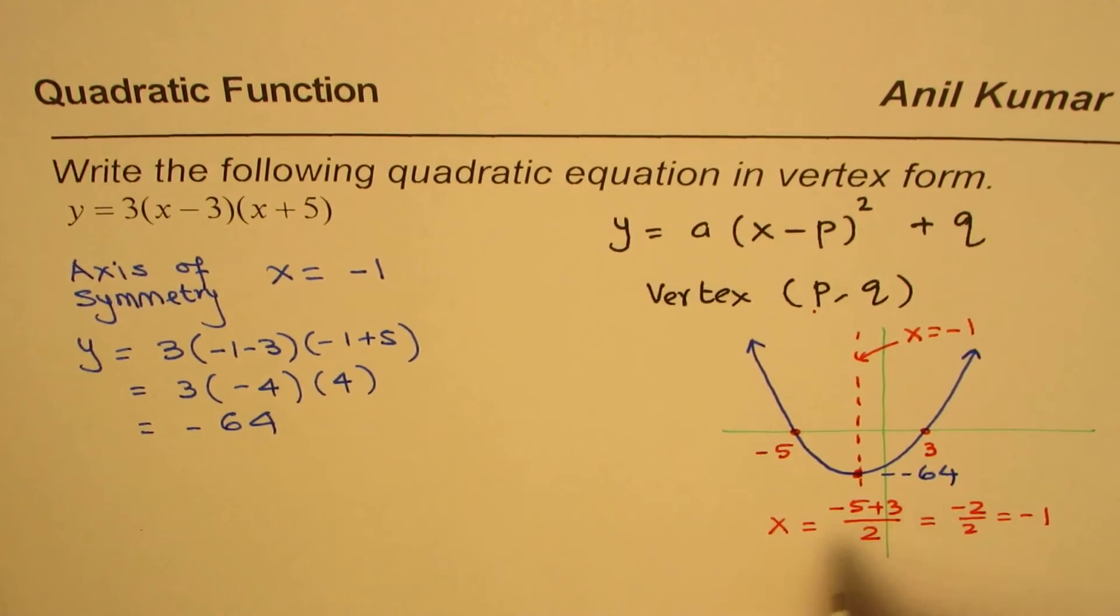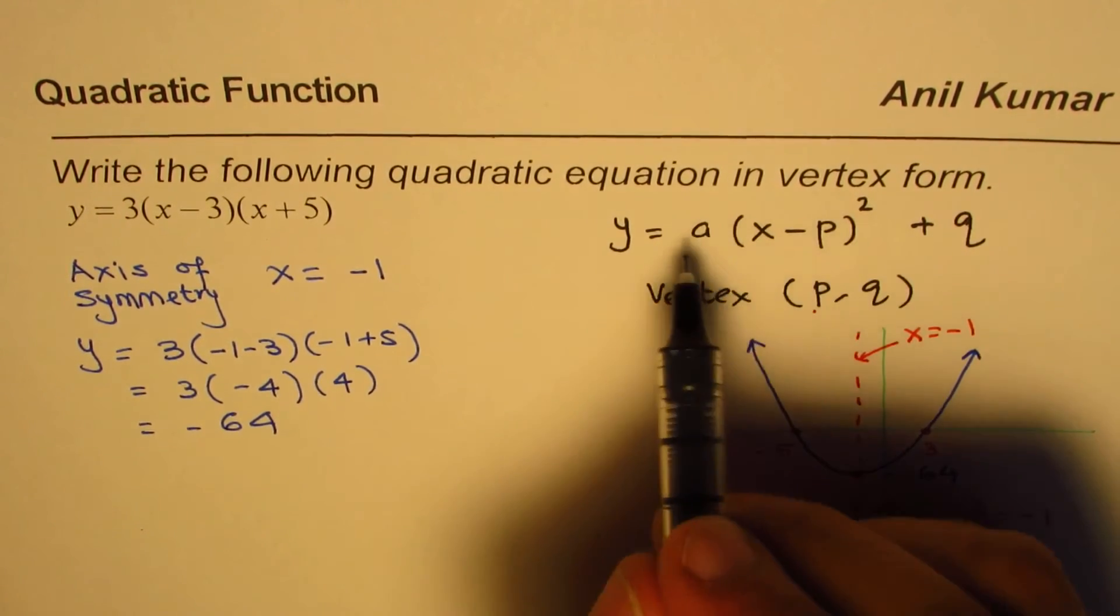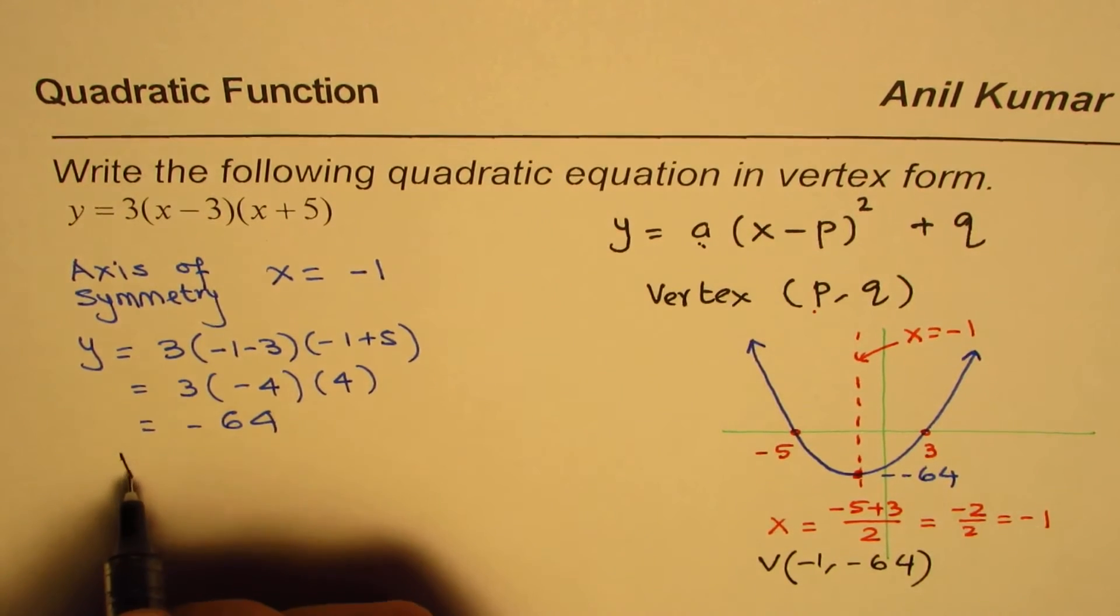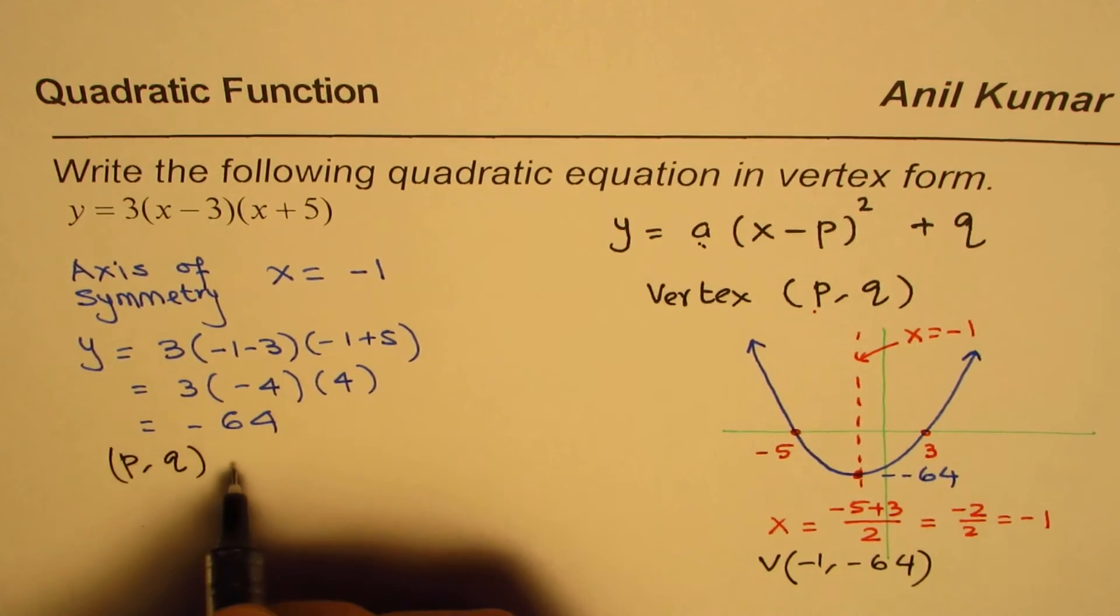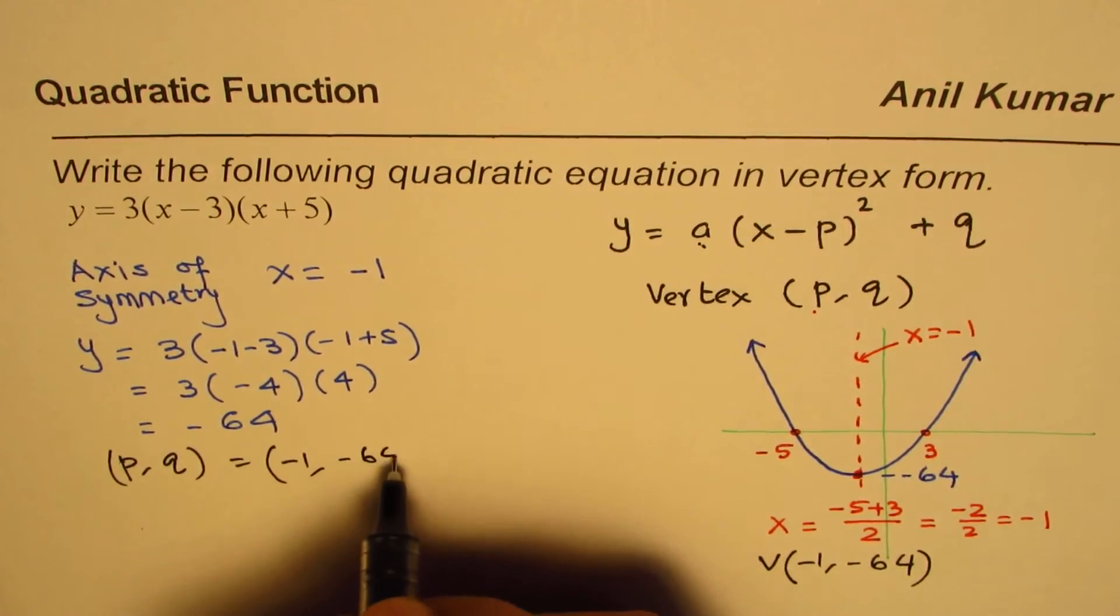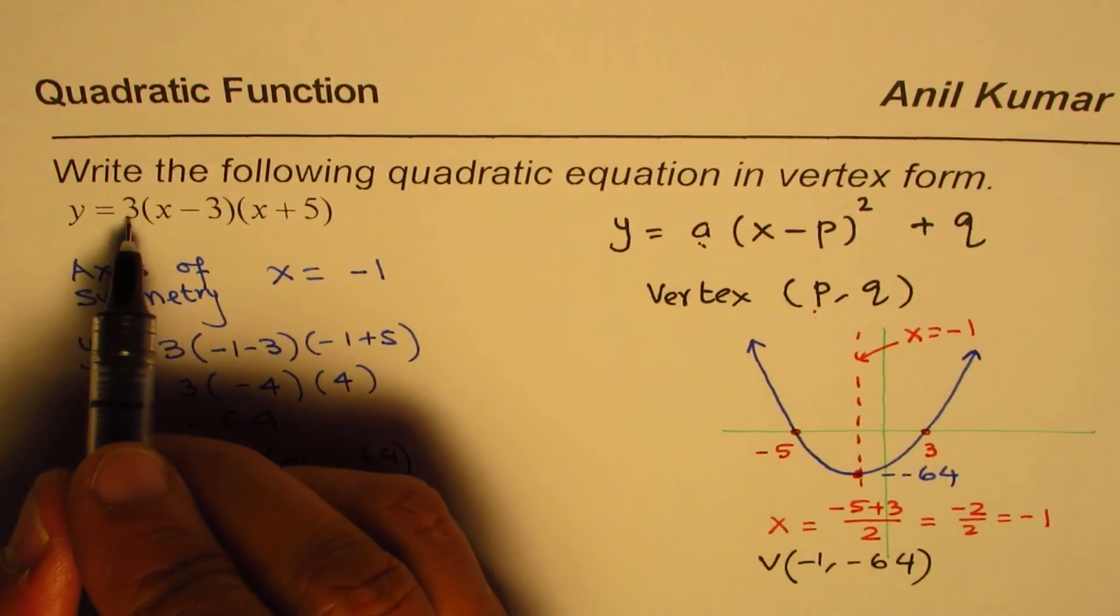So now from here we know that the vertex is at minus 1, minus 64. How about a? So we know the vertex, that means p comma q is indeed minus 1, minus 64.